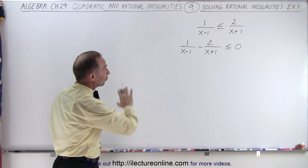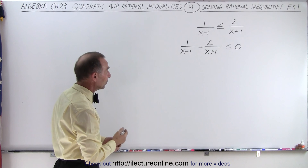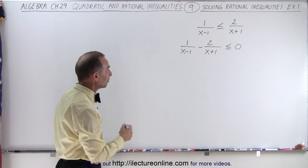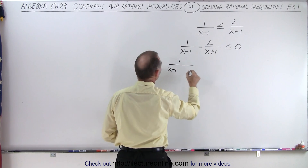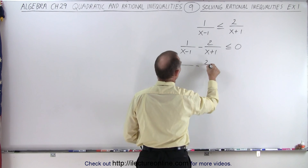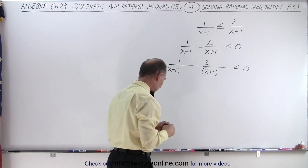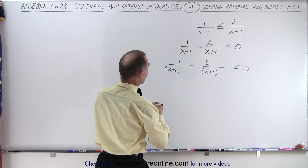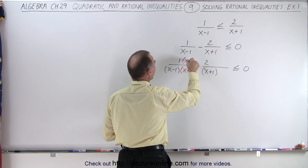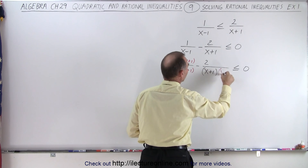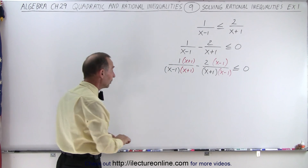The next thing we need to do is place that into the format of a single fraction. We need to find the common denominator, which is x minus one times x plus one. We multiply the first fraction's denominator by x plus one, and do the same to the numerator, then multiply the second fraction's denominator by x minus one and do the same to the numerator. That's how we find the common denominator.